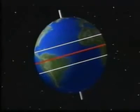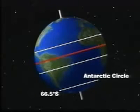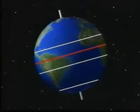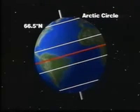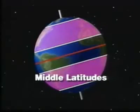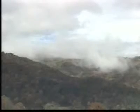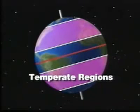South of the Tropic of Capricorn, at 66 and a half degrees south latitude, is a line of latitude called the Antarctic Circle. Another line, called the Arctic Circle, is located north of the Tropic of Cancer at 66 and a half degrees north latitude. The areas between the tropics and these two lines are called the middle latitudes. The Sun never shines directly on these areas, so places located here are cooler than in the tropics. The middle latitudes are also known as the temperate regions.